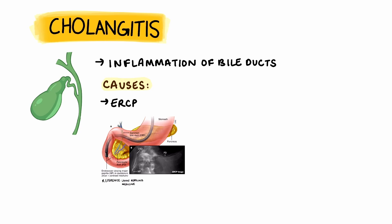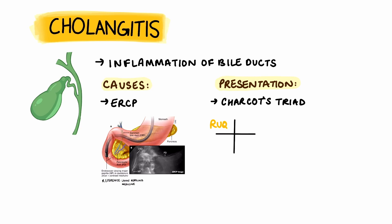For acute cholangitis we use Charcot's triad, which includes right upper quadrant pain, fever, and jaundice. Unlike cholecystitis, this pathology causes jaundice due to complete biliary obstruction.